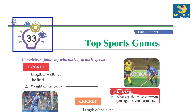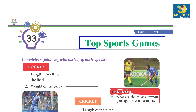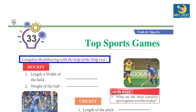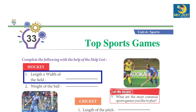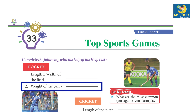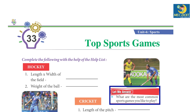Chapter 33: Top Sports Games. Complete the following with the help of the table. Hockey: length and width of the field — 91.4 meters into 55 meters. Weight of the ball — 115 to 263 grams.